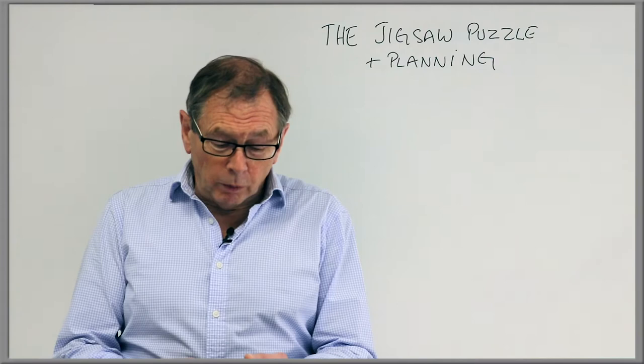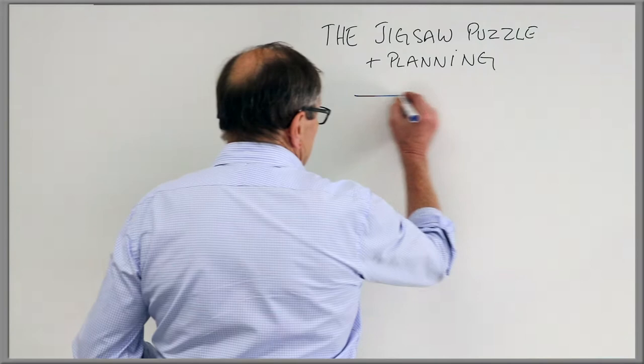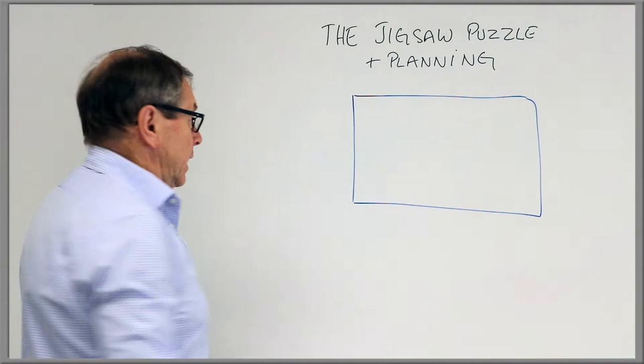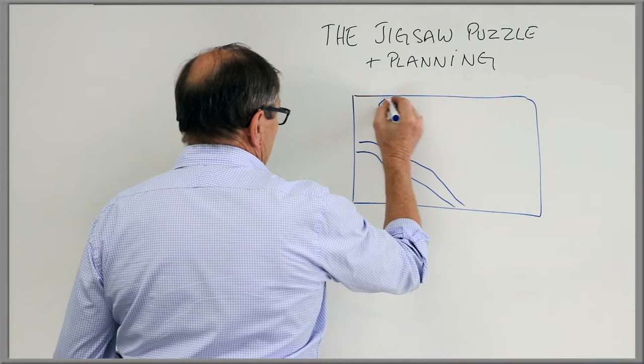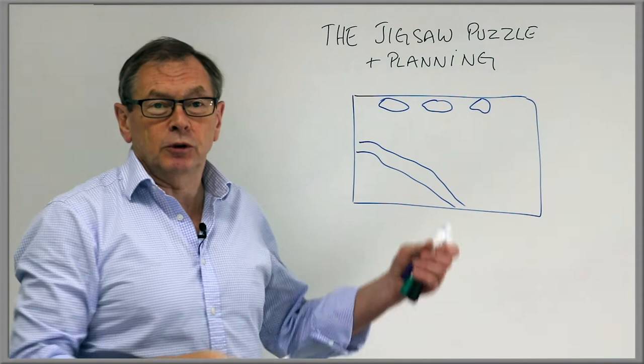When you think about the standard jigsaw puzzle, what does it look like? We have a picture like so, and this picture may have a stream or river running through it. It'll have some clouds up in the sky. Mine are blue clouds, sky clouds with white in the middle.